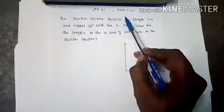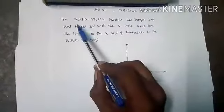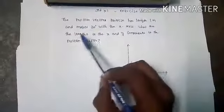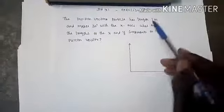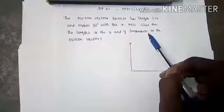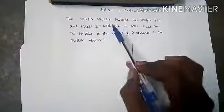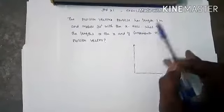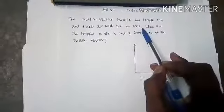Standard 11th, Exercise 2.1. The question is: the position vector of a particle has length 1 meter and makes an angle of 30 degrees with the x-axis. What are the lengths of the x and y components of the position vector? Here the position vector length is 1 meter and it makes an angle of 30 degrees with the x-axis.